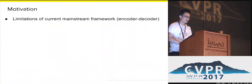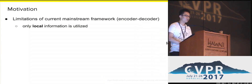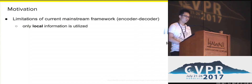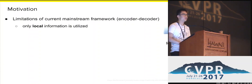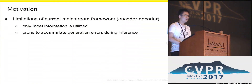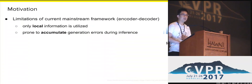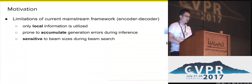However, there are some limitations of this mainstream framework. Since they generate sentences sequentially, only local information is utilized — meaning the information available before each time step. It doesn't consider the big picture of what kind of sentence is suitable in the end. Secondly, considering only local information makes it prone to accumulate generation errors during inference. Lastly, it is sensitive to beam sizes during beam search.